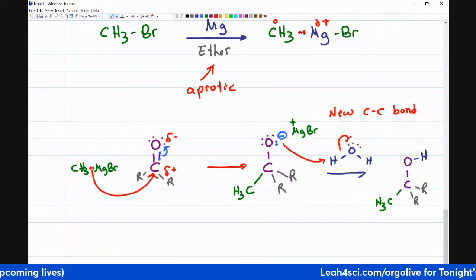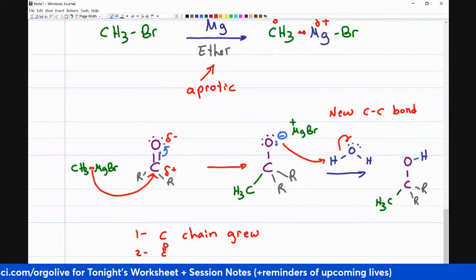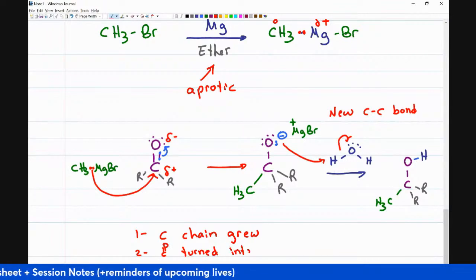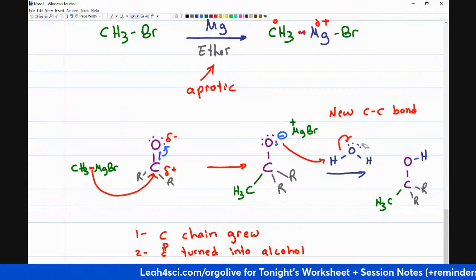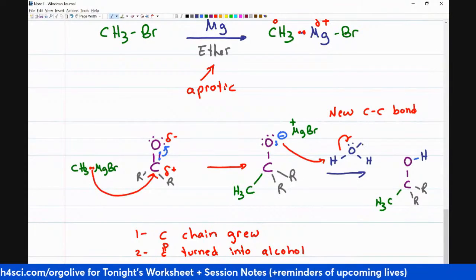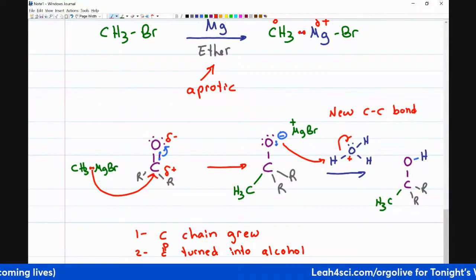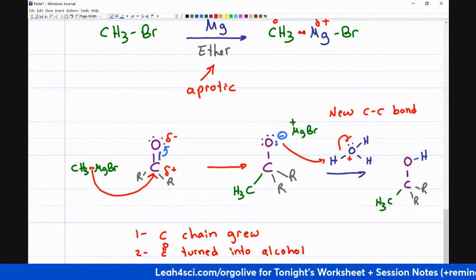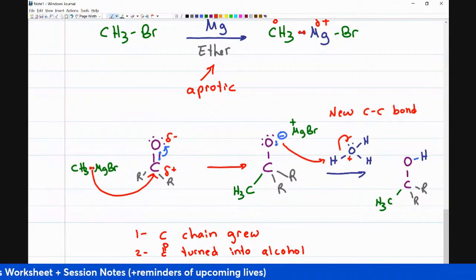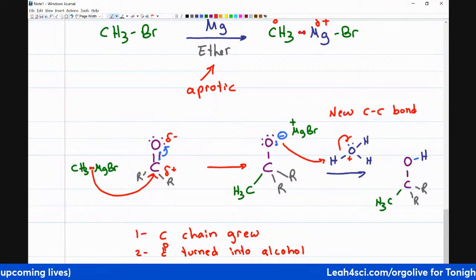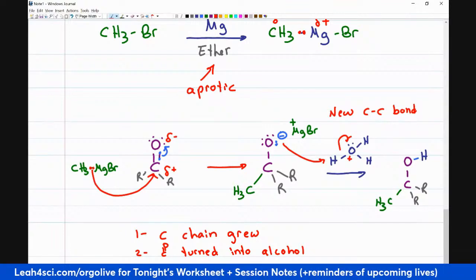The two key things that happened: one, the carbon chain grew — chain elongation; and two, the carbonyl turned into an alcohol. Make sure to show this as step one and step two, not happening at the same time. If you dissolved the Grignard in water or acid, the Grignard would attack the solution, get destroyed, and there's no more Grignard. Always show them as separate steps.